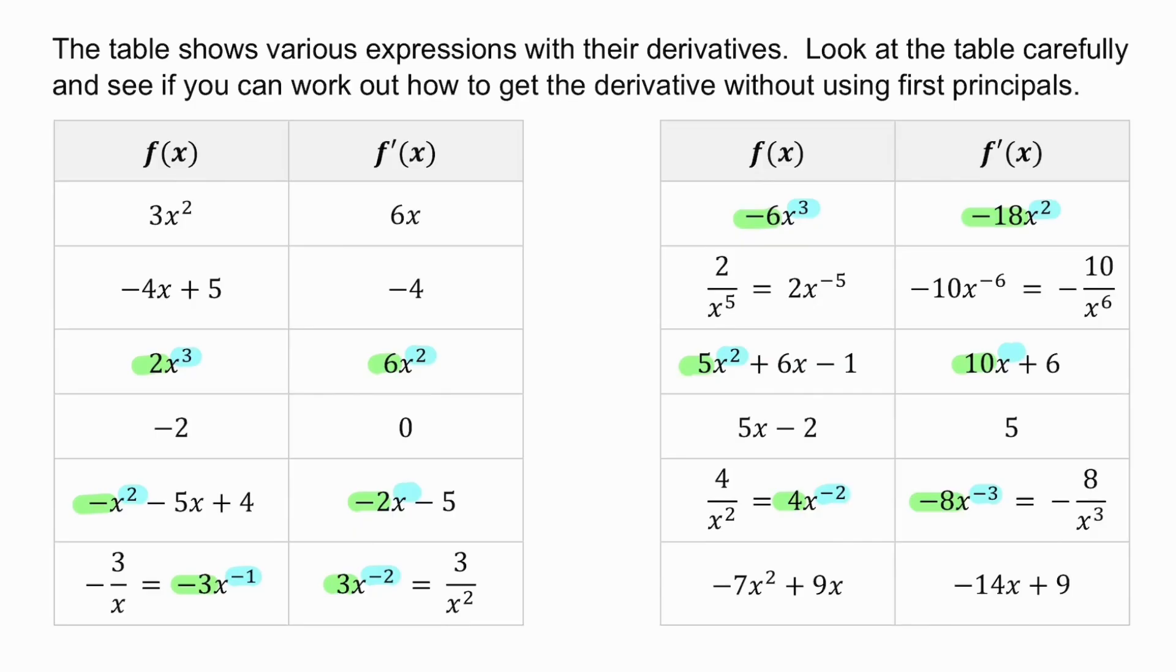So you might have started picking something up with that. How do I get the 6? 3 times 2 is 6, and the exponent is 1 less. 3 times minus 6 is minus 18, the exponent is 1 less. 2 times 5 is 10, and my exponent goes from 2 to 1. 2 times minus 1, minus 2, and the same with my exponent. It works in exactly the same way with the negative exponents. 4 times minus 2 is minus 8. Minus 2 minus 1 is minus 3.